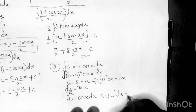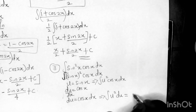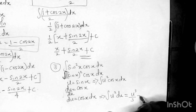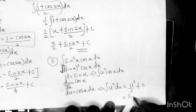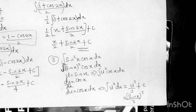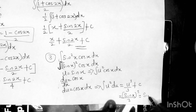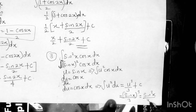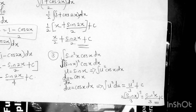Integrating u² gives u³ over 3, plus C. Since u equals sin x, the answer is sine cubed x over 3, plus C. So the final answer for the third example is sin³x over 3 plus C.